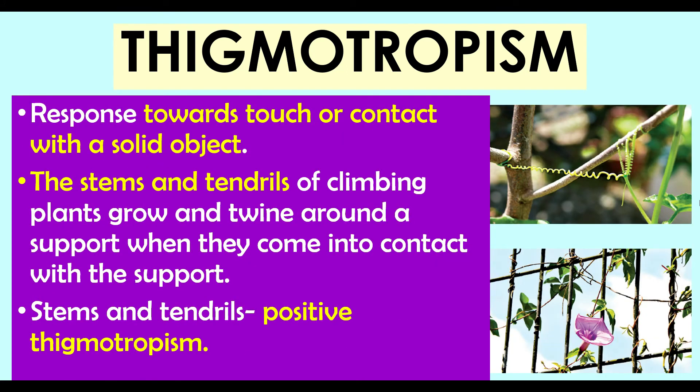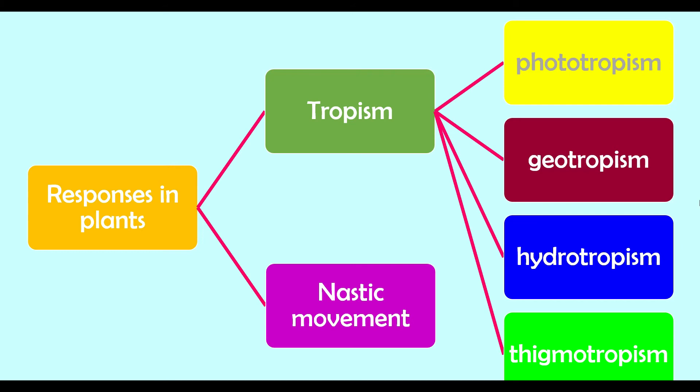The last tropism is thigmotropism — a response towards touch. Tendrils or twining stems show positive thigmotropism when they cling onto whatever objects or other plants they come into contact with. This enables plants to grow upwards to obtain sunlight and grip objects for support. Roots show negative thigmotropism since they avoid any object that obstructs their search for water.